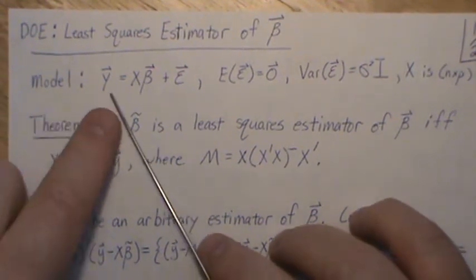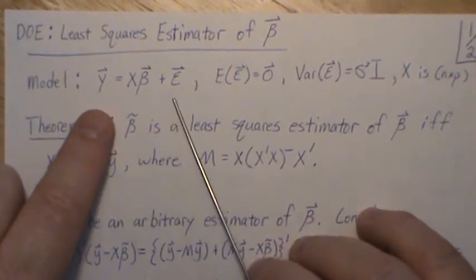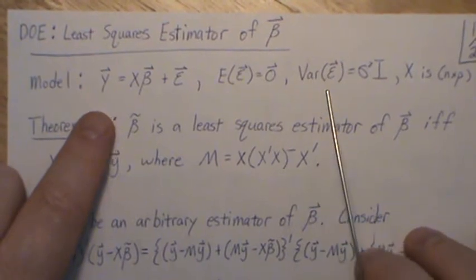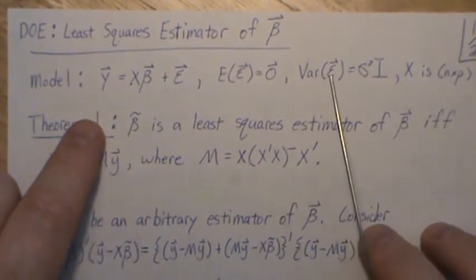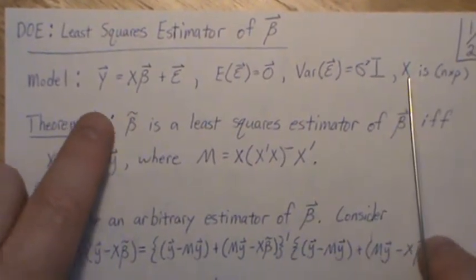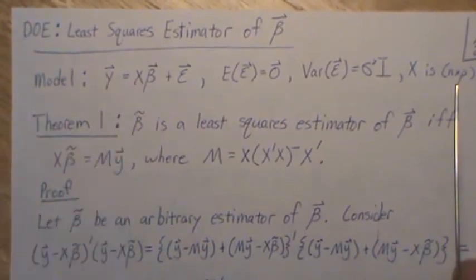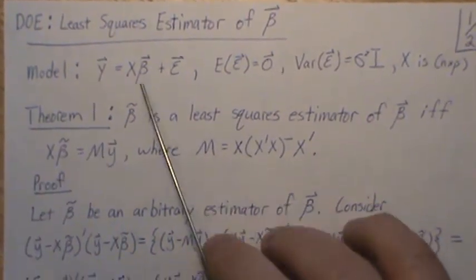And as a reminder, the model is y equals x beta plus epsilon, where the mean of epsilon is zero, constant variance sigma squared, covariances are zero. And x, we're going to let be dimension n times p. So we have a sample size of n and we have p beta parameters.